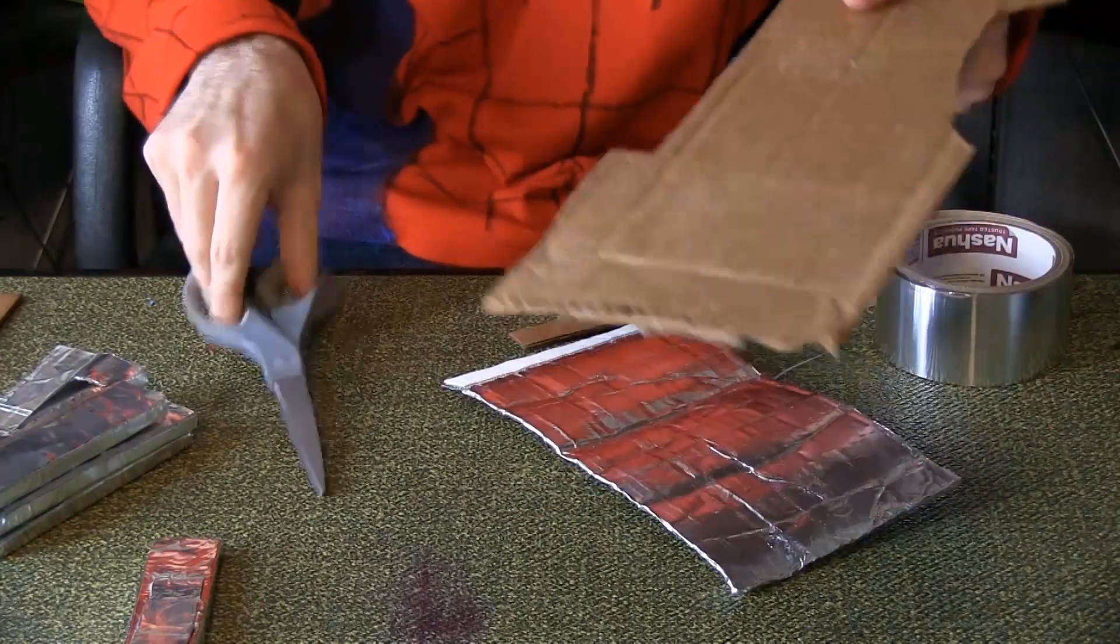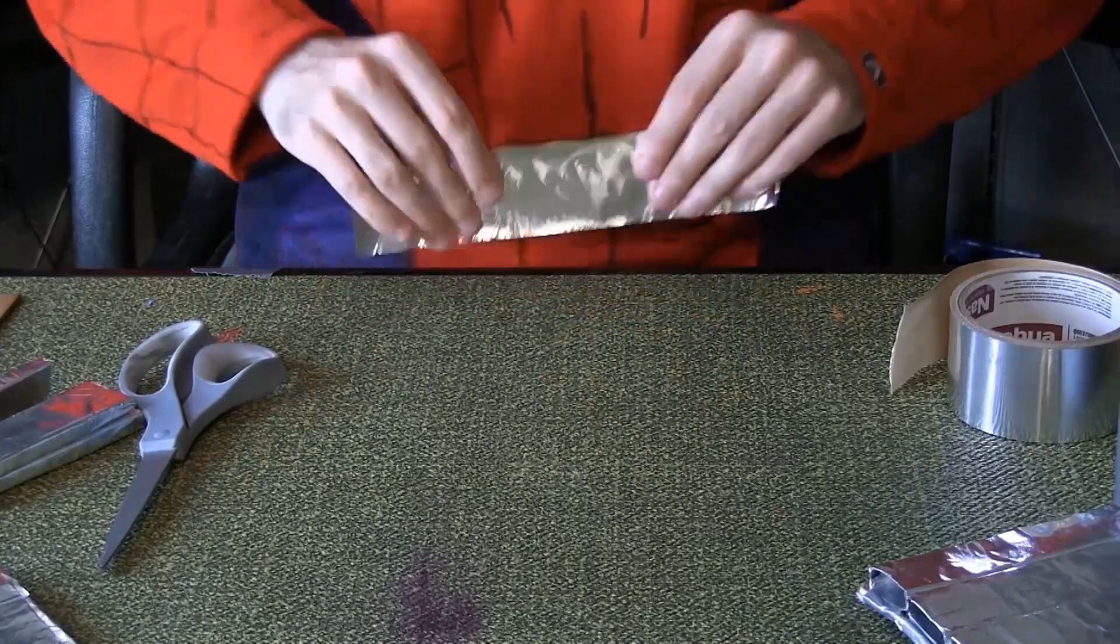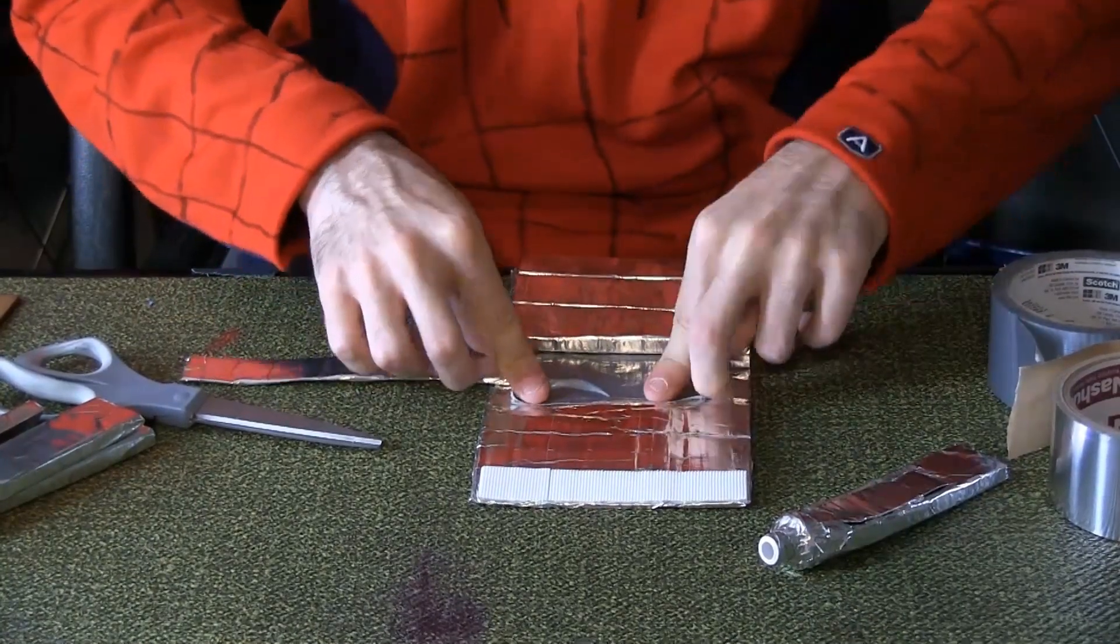Cut a strip of cardboard about a foot long and three-quarters of an inch thick. Cover the piece in aluminum tape. Tape it down next to the first three canisters with one end sticking off to the side.